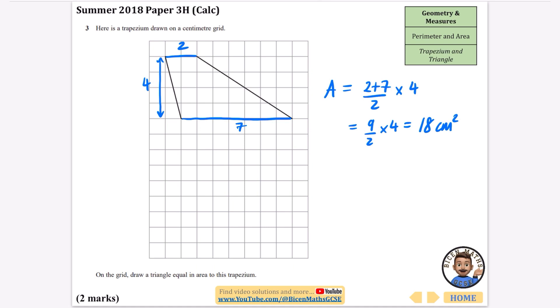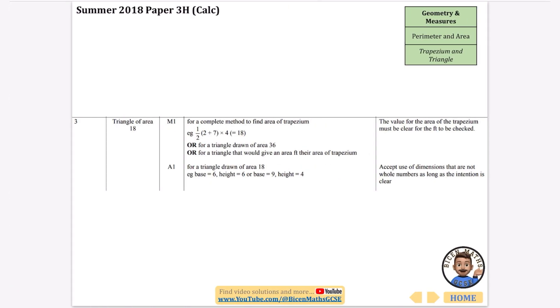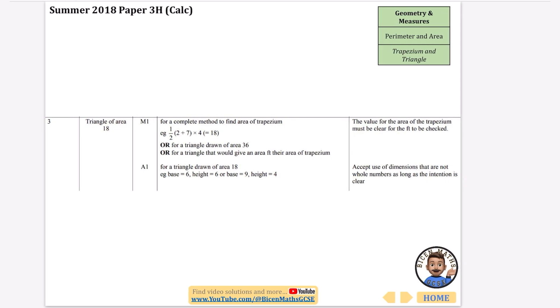For a triangle you halve it at the end, so if I make the base and height multiply to 36 it should be good. I'm going to do the base with 6 and 6 up the side. That's 6 times 6 which is 36, and when I halve that I get 18. So 6 times 6 divided by 2 is 18 centimeters squared.